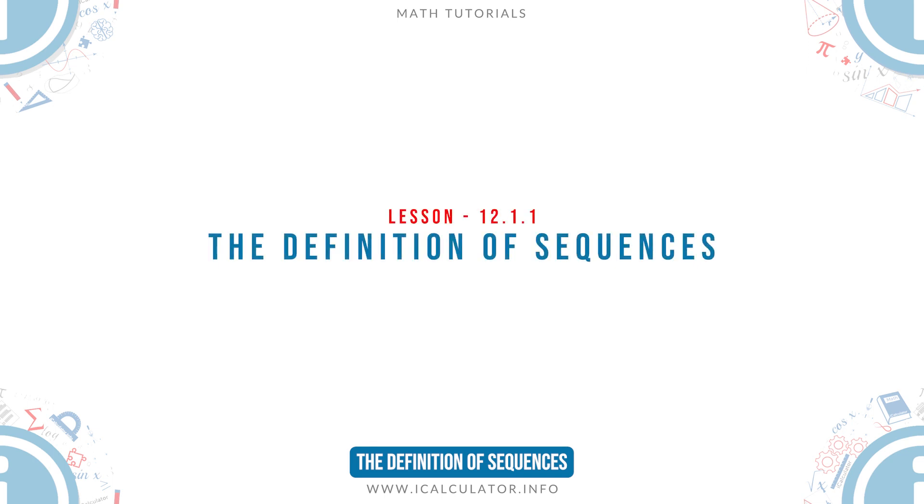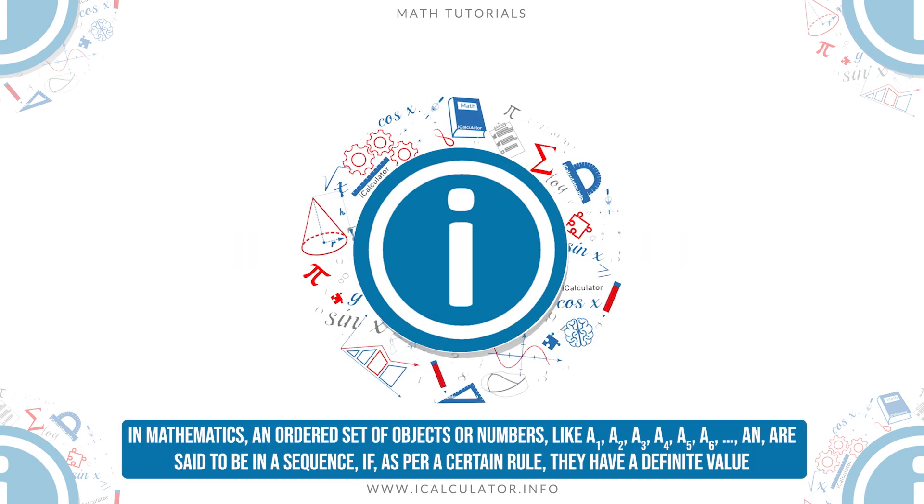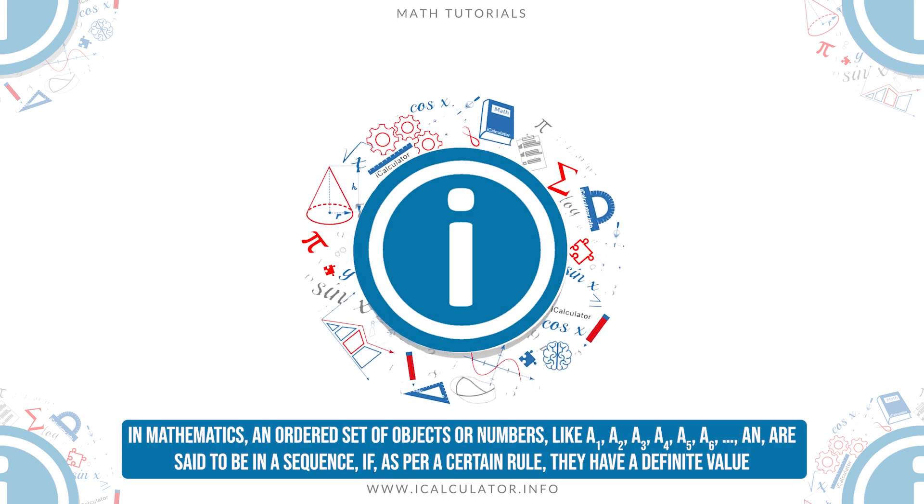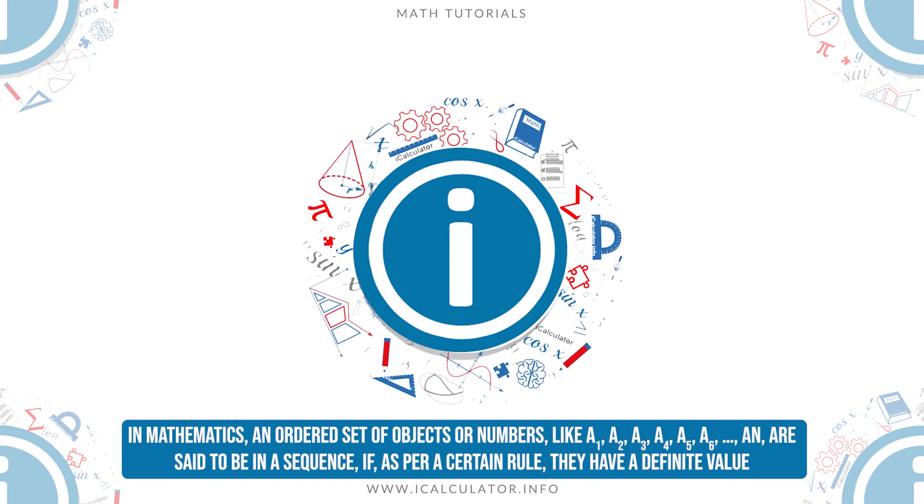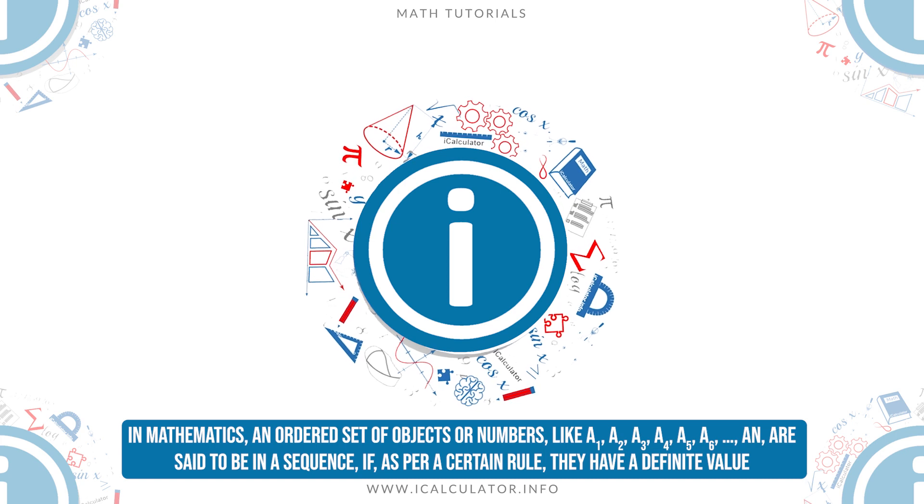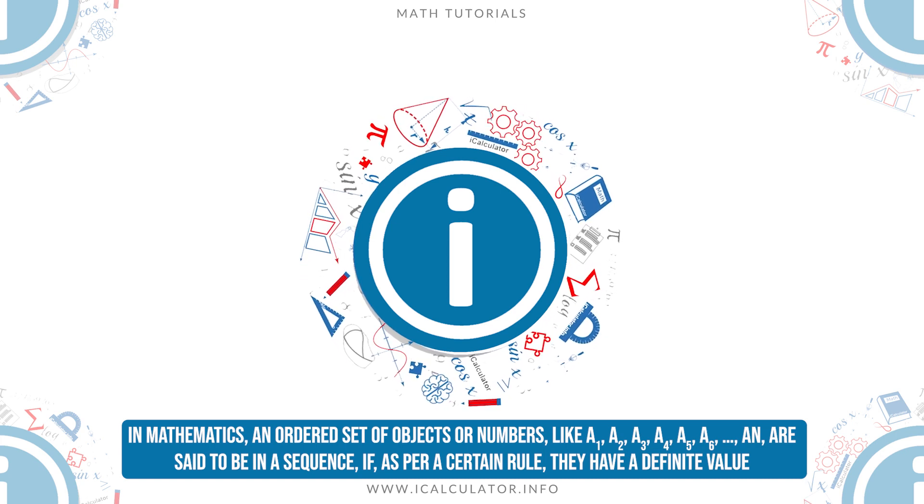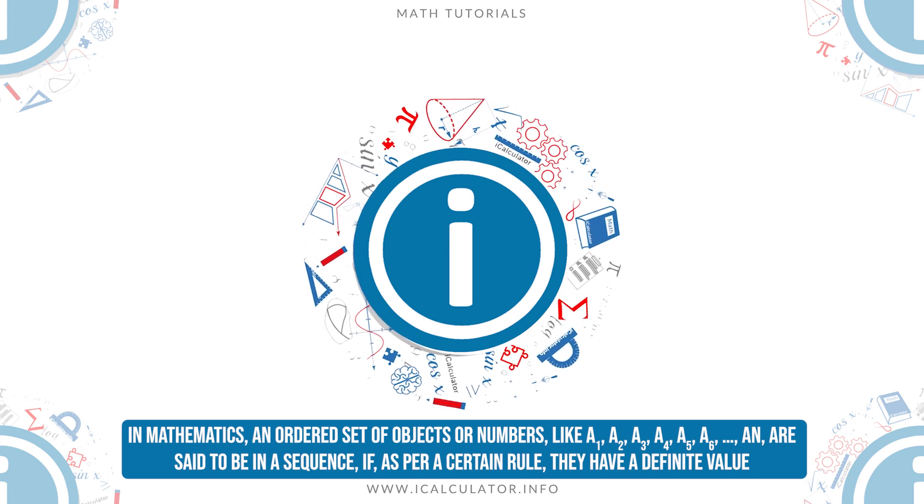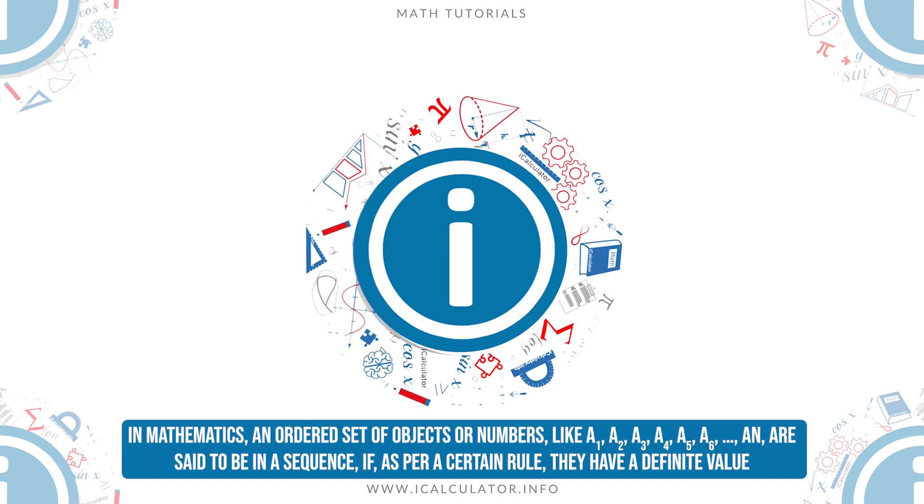The definition of sequences. In mathematics, an ordered set of objects or numbers, like a₁, a₂, a₃, a₄, a₅, a₆, ... aₙ, are said to be in a sequence if, as per a certain rule, they have a definite value.